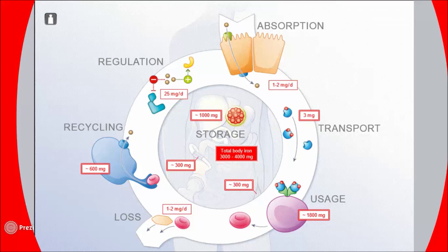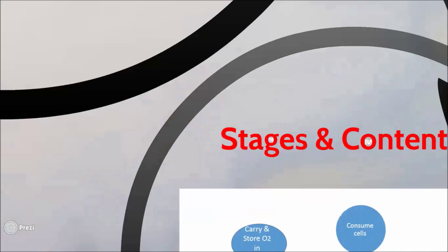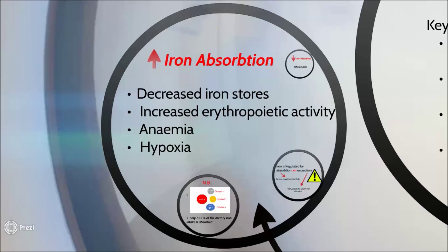For the stages: iron is transported to the intestine where it is absorbed, then iron is carried to bone marrow where it can enter in synthesis of red blood cells. Only a small amount of iron is lost and the rest is reabsorbed and reused again. Each stage will be demonstrated individually.